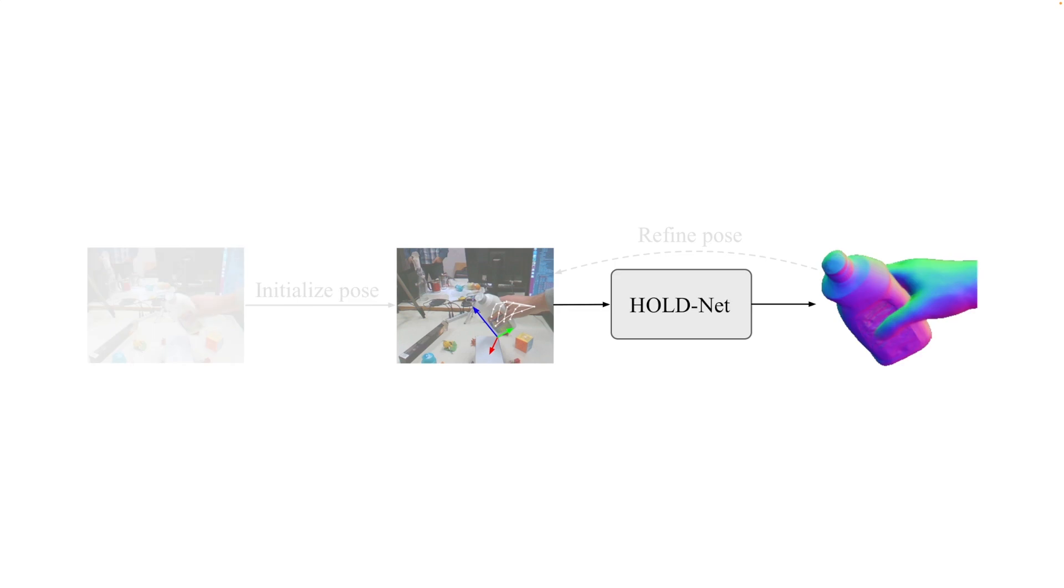we train HoldNet, a compositional neural implicit model of an articulated hand and an object. Once HoldNet is trained, we further refine the hand and object poses based on interaction constraints. With these refined poses, we retrain HoldNet for more accurate shape reconstruction.